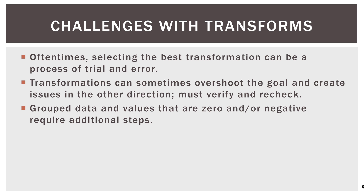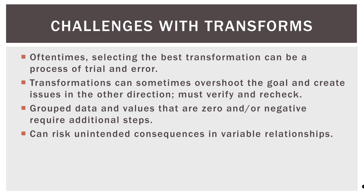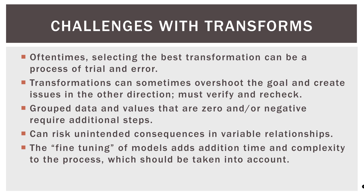Group data and values that are zero or negative require additional steps because of the nature of those numbers. We can also risk unintended consequences in variable relationships, so after transformation we circle back and do more exploratory data analysis to make sure we haven't created any relationship problems — not just a univariate issue. Because of all this additional work, fine-tuning models adds time and complexity. Once we transform variables, we go back to make sure the transformation is appropriate, and again to check that we haven't created new issues in our relationships.